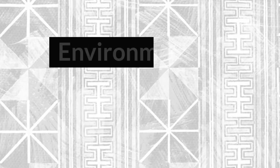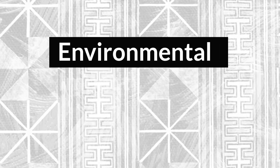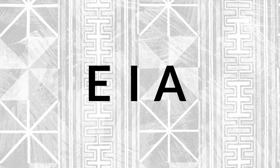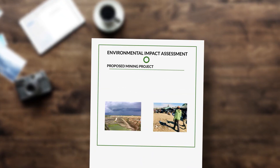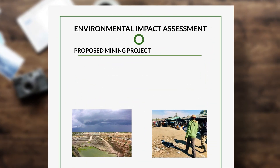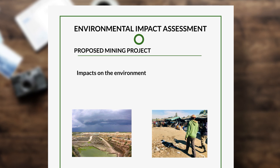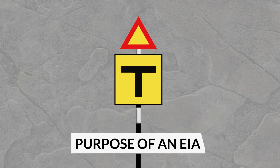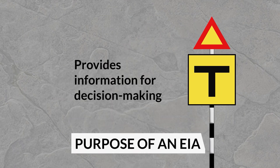In this video, we will look at the Environmental Impact Assessment, or EIA. An EIA is an evaluation of a project to determine its impact on the environment and on human health. It describes how these impacts will be monitored. The purpose of an EIA is to provide information for decision-making on the environmental consequences of proposed actions.